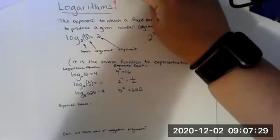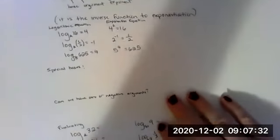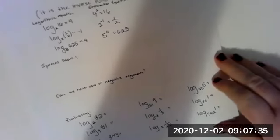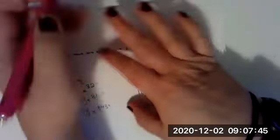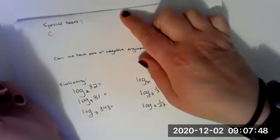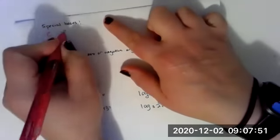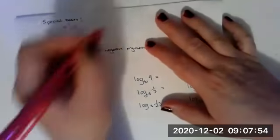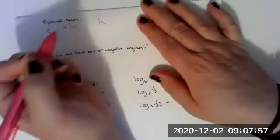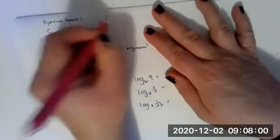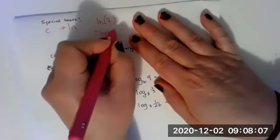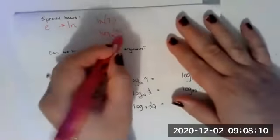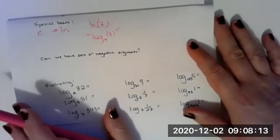A couple of special bases that you will see. Two special bases that we'll be dealing with in this class is E. So log base E, we write as natural log. So you could say natural log of, say, seven, that's basically saying log base E of seven. So you might see natural log sometimes, and that just refers to E.